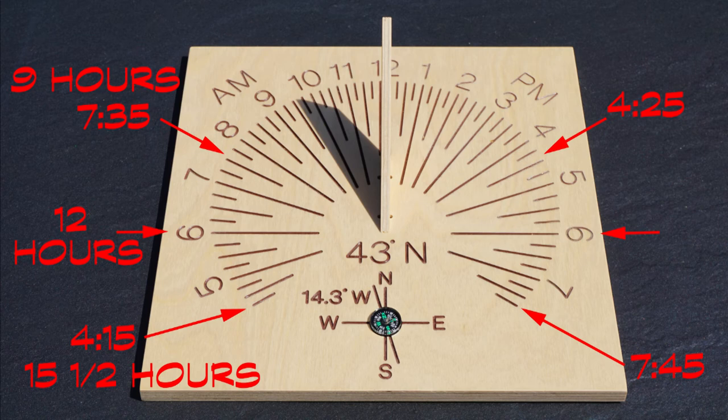At the spring and autumn equinoxes, when the sun rises and sets due east and west, it would be 12 hours. And at the summer solstice, we would have about 15 and a half hours of daylight from 4:15 a.m. to 7:45 p.m.